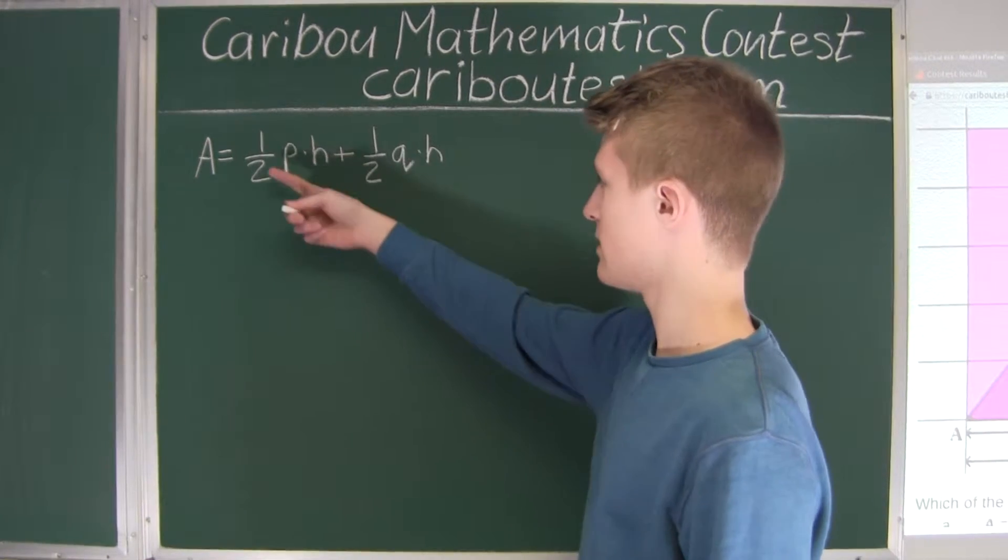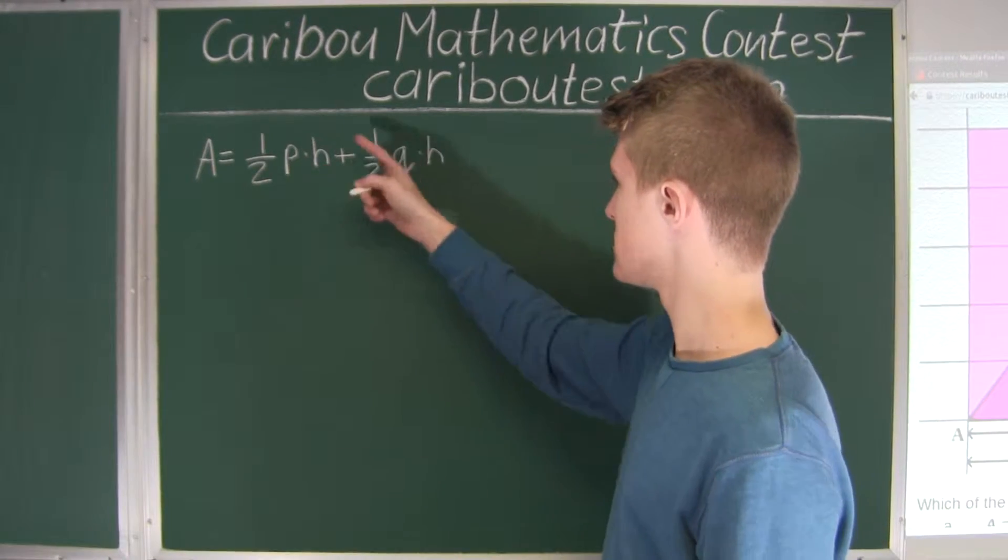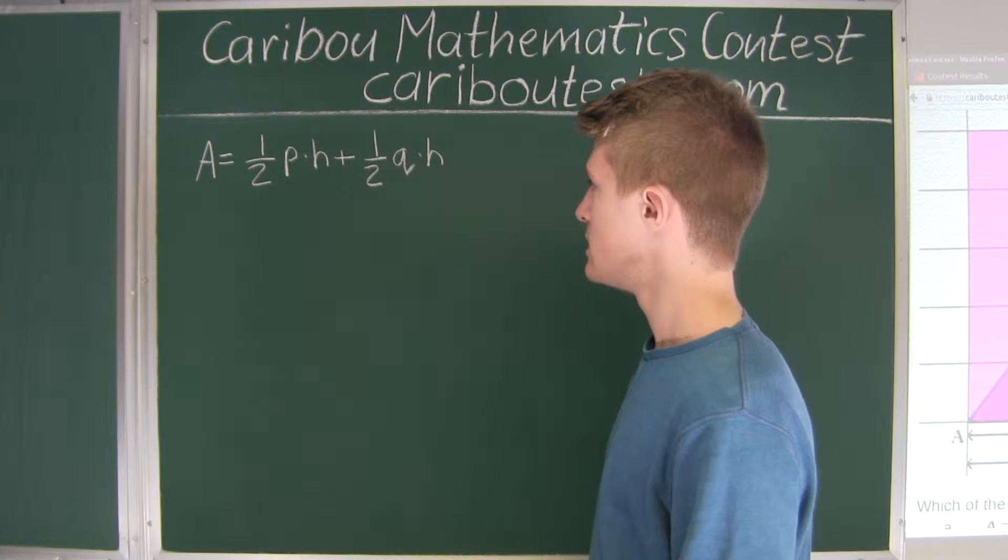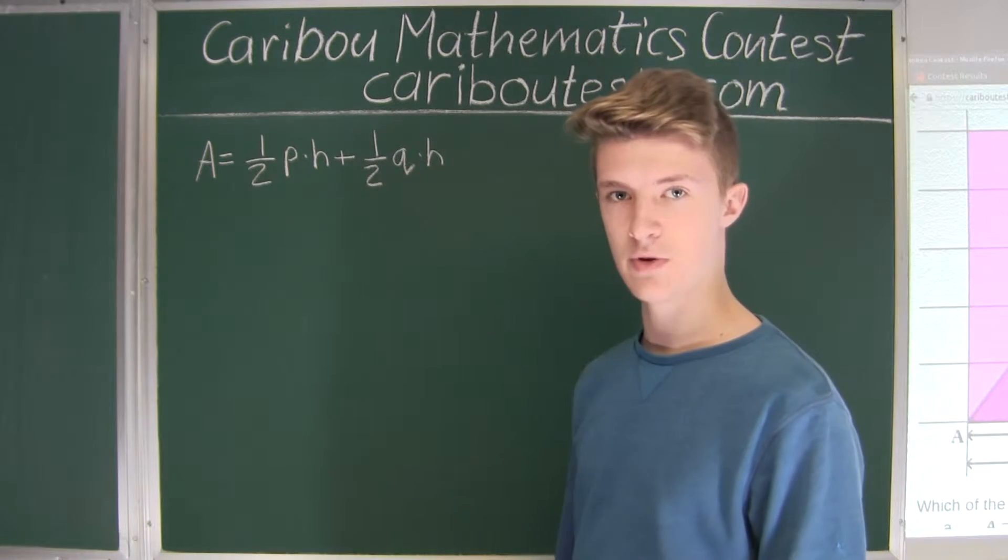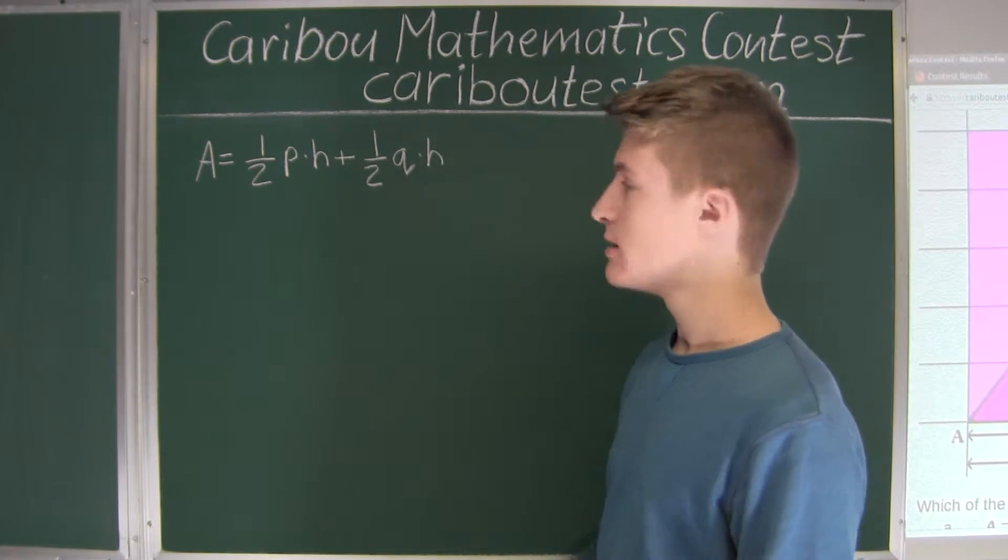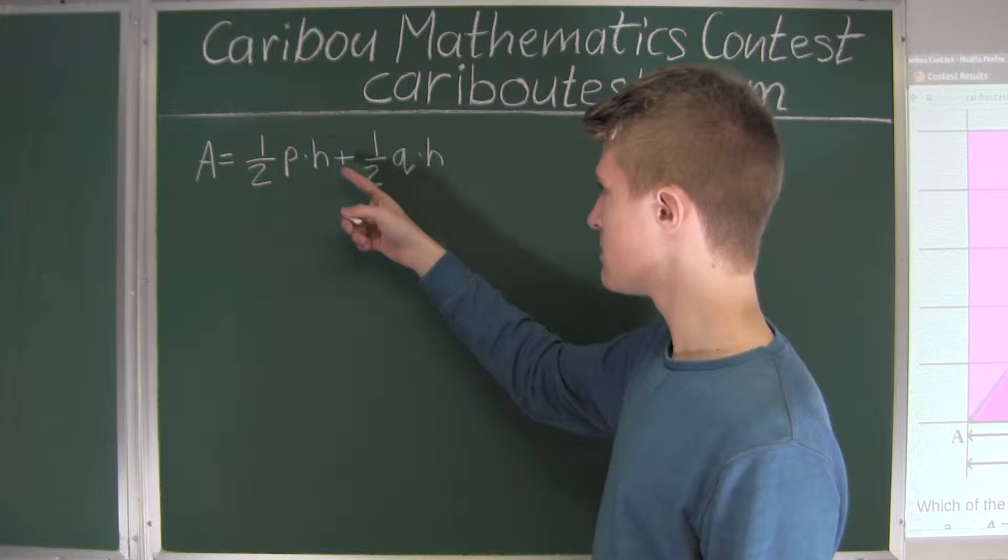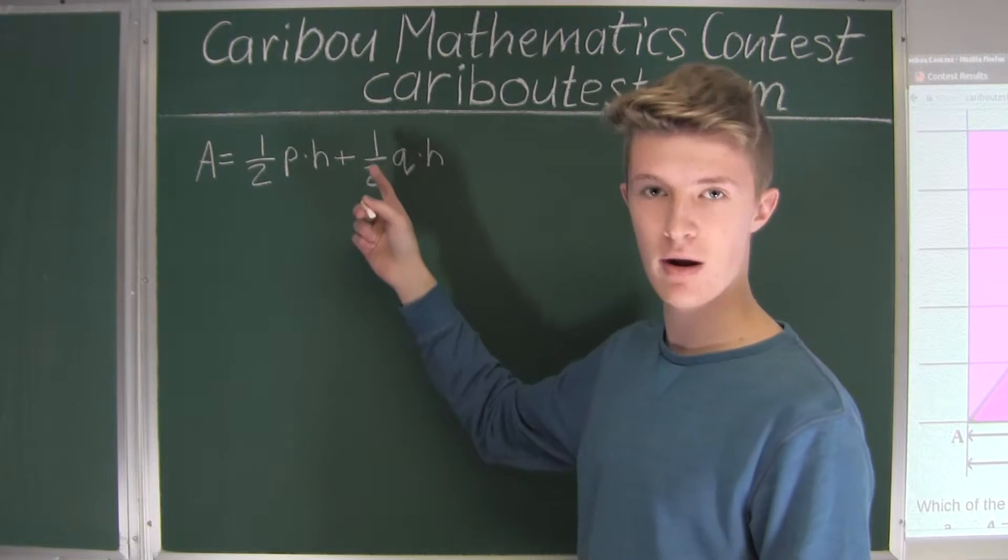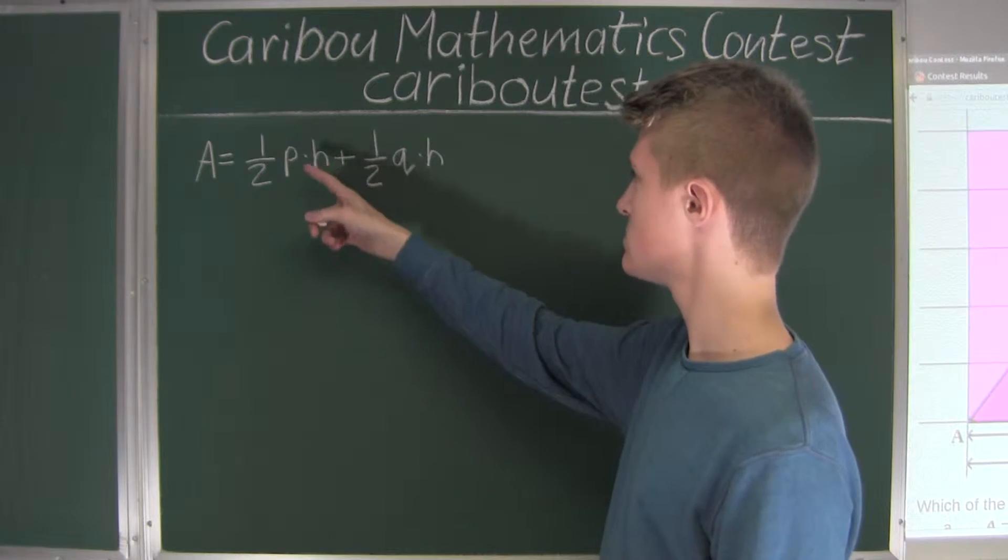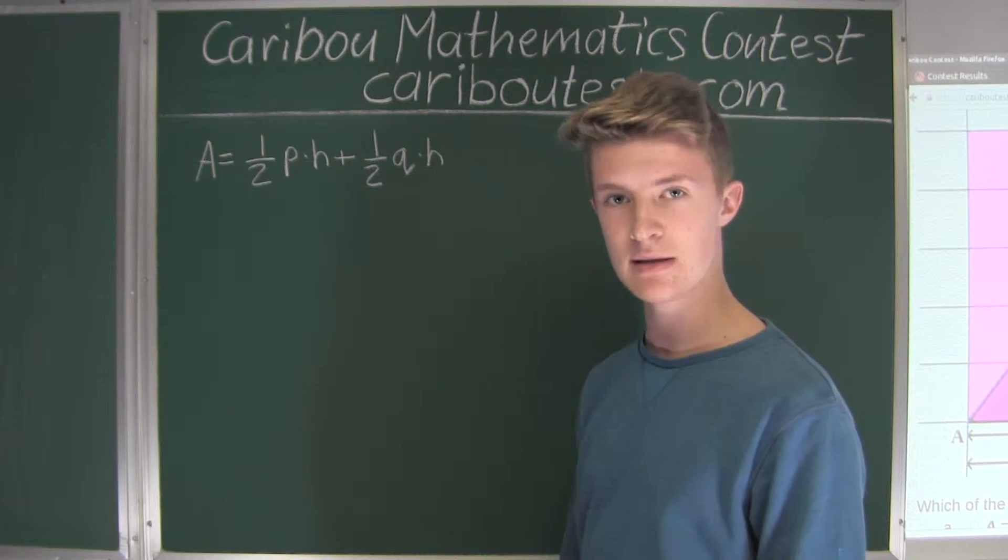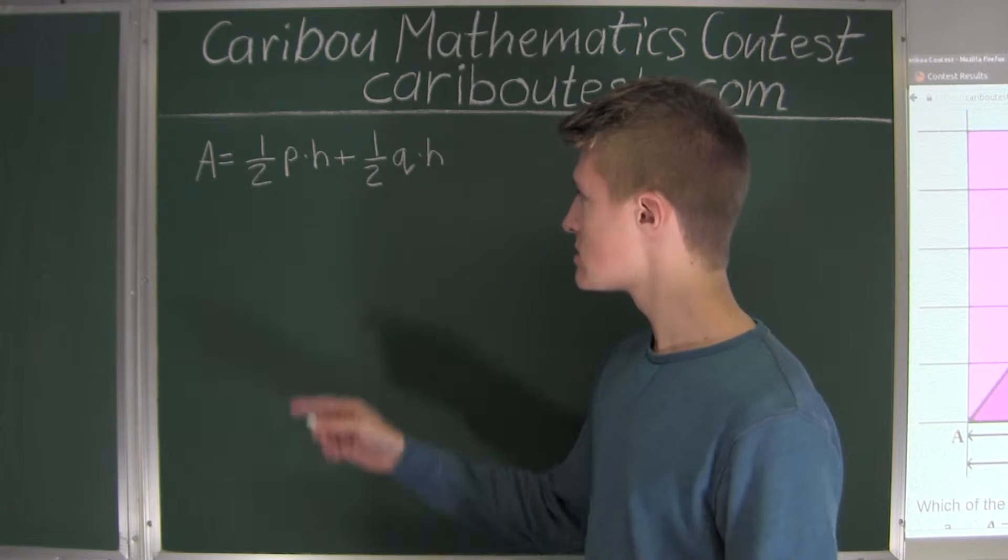So here, they have the area as a sum. Now, what the distributive law is, is where you can write the sum as a product as long as all terms in that sum have at least one common factor. So in this sum, here we have two terms that we have to look at, which is a half of P-H, and we have a half of Q-H.